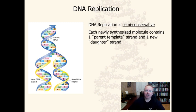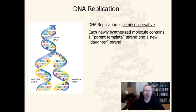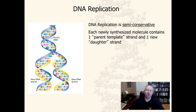When Watson and Crick first proposed the structure for DNA in their 1953 article in Nature, they even implied there would be a mechanism for replication based on complementary base pairing. What was discovered is that DNA replication is semi-conservative, meaning that for each new DNA molecule produced, there is one old strand — referred to as the parent strand — and one new strand of DNA.